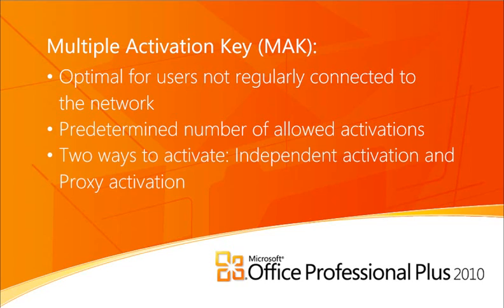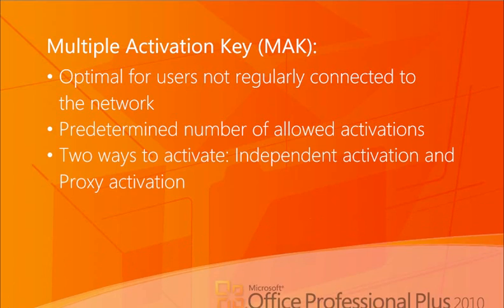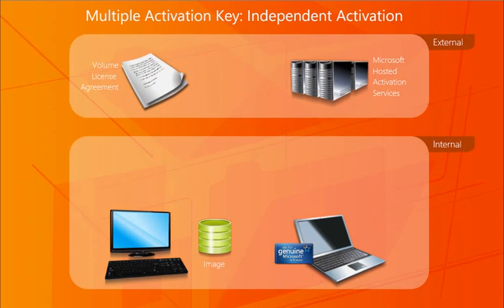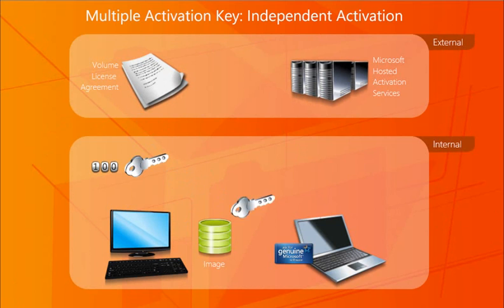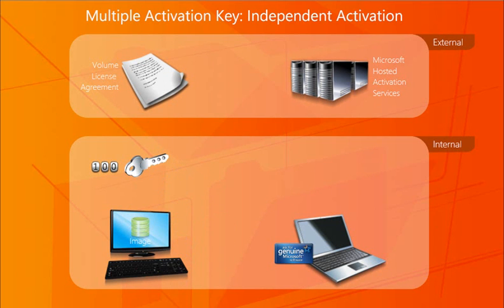The first method is independent activation, which means that each computer independently is activated with Microsoft either over the internet or by telephone. A MAK product key is installed on a client computer or embedded in the system image on the client. Each client then activates with Microsoft.